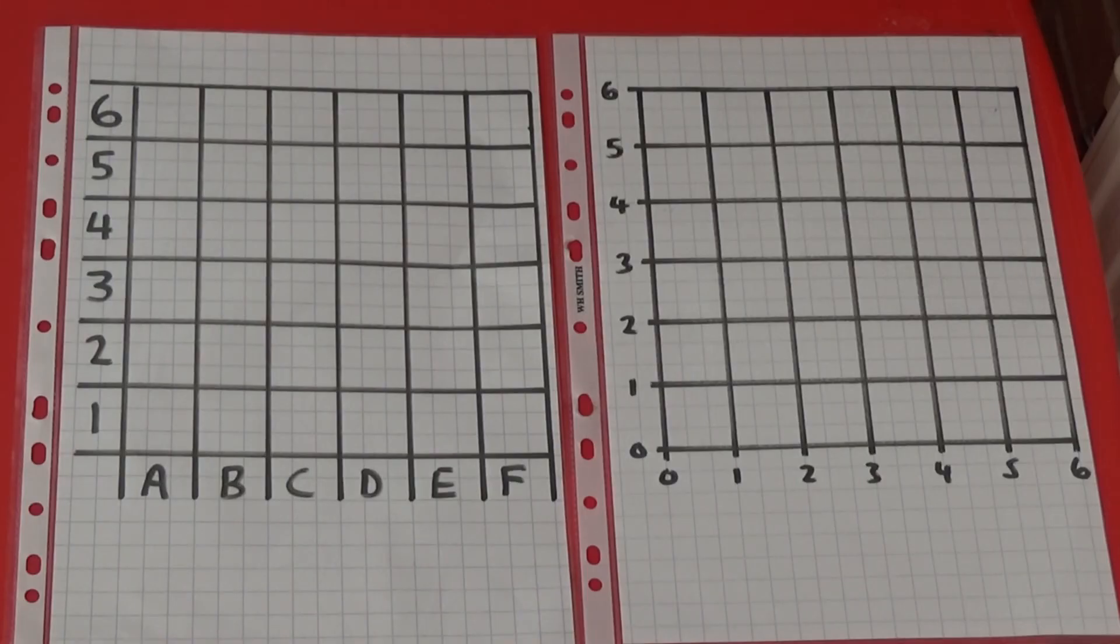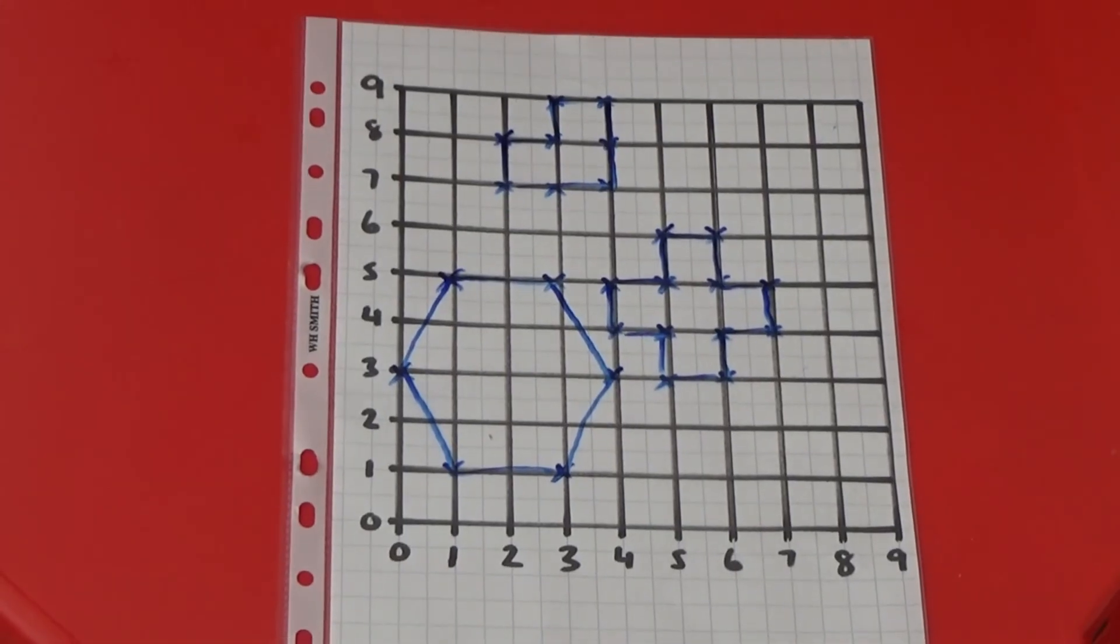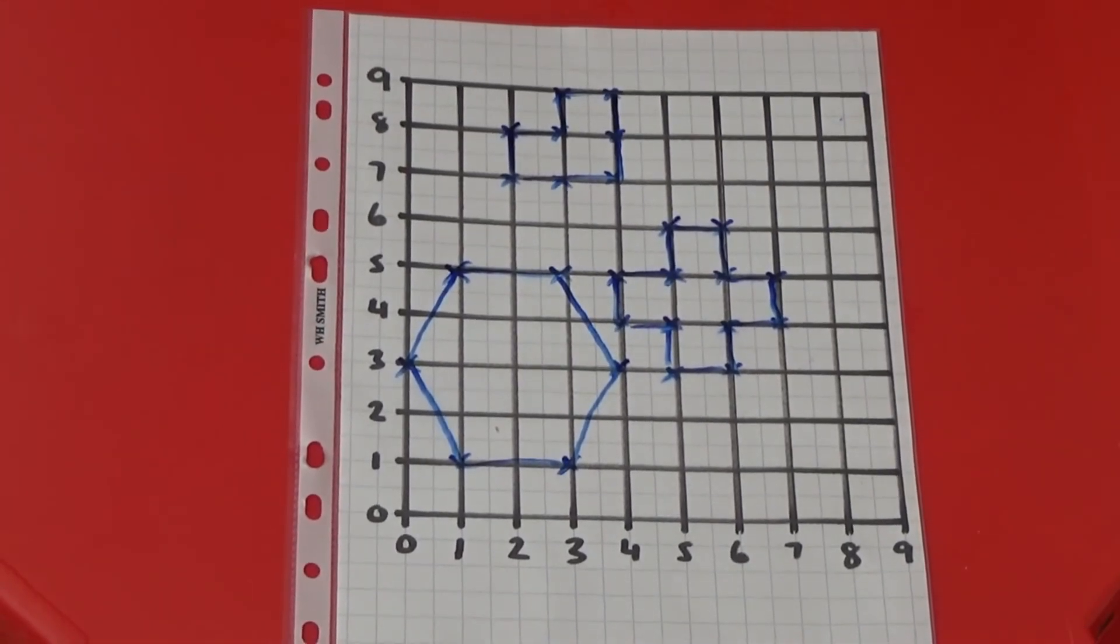To make this game easier, you can use a large grid with fewer sections. To make the game harder, you can use a range of different shapes.